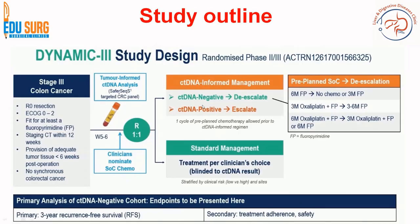There are two arms in the trial. One is standard management based on the clinician's choice but blinded to ctDNA results. The other is ctDNA-informed management: if ctDNA is negative, the aim is to de-escalate chemotherapy, and if ctDNA is positive, the aim is to escalate chemotherapy. Before deciding on informed management, one cycle of pre-planned chemotherapy is allowed.